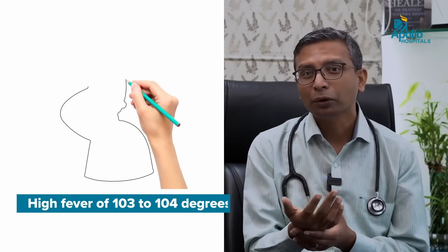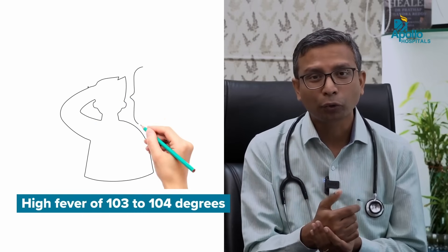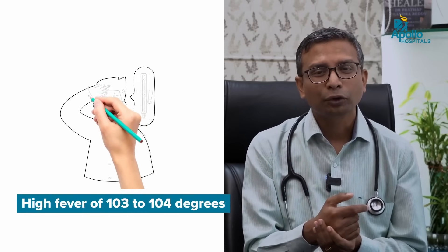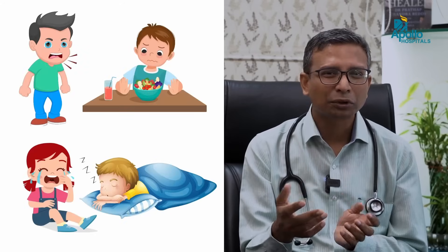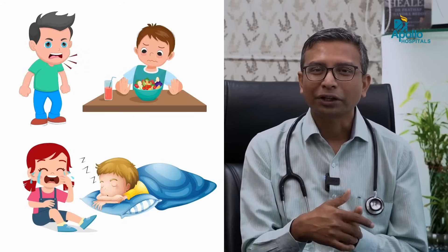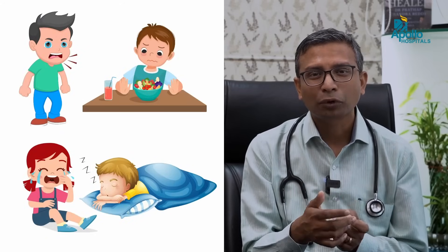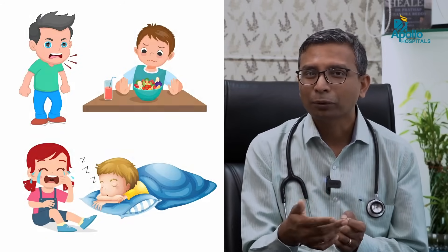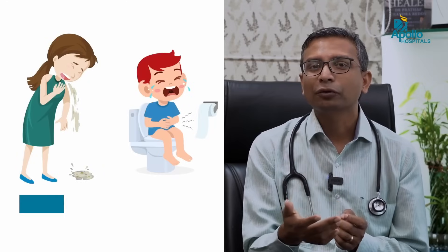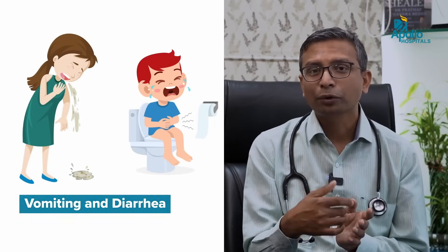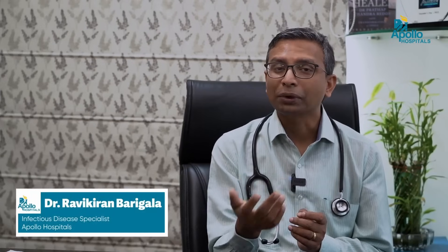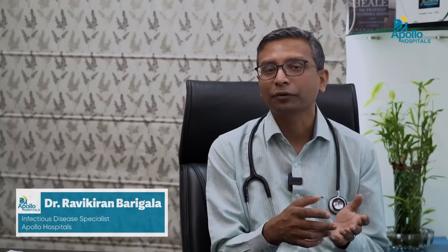You can have fever, which could be very high — up to 103 or 104 degrees. You'll be very weak, and especially in children they become very irritable, may not eat well, might be crying more, and may want to sleep a lot. Sometimes there may be vomiting and diarrhea. If it becomes more serious, it can lead to other complications depending on which organ is affected.